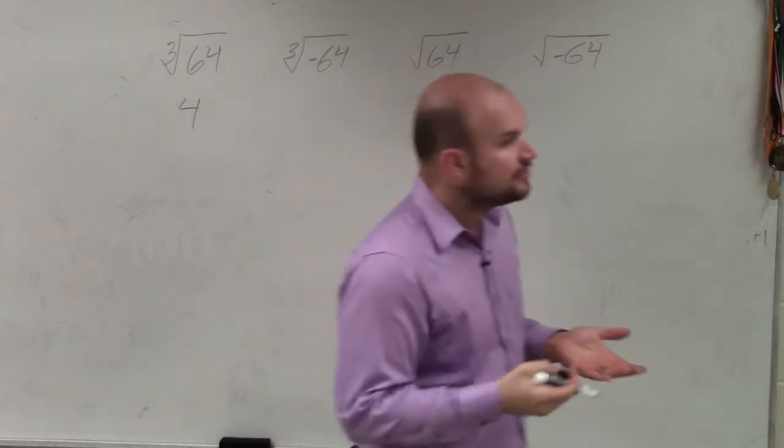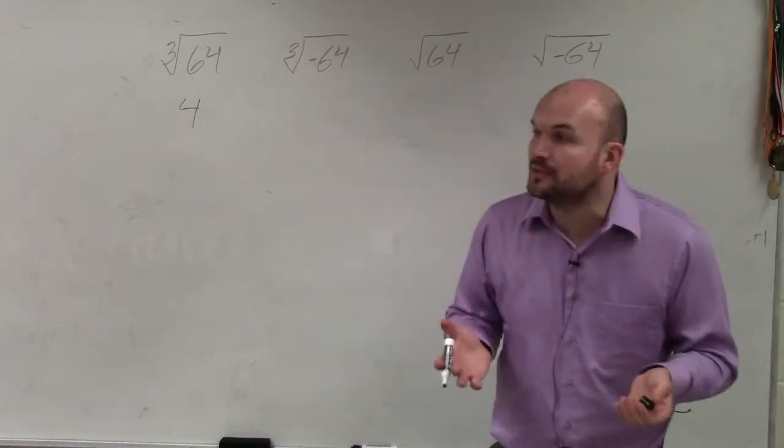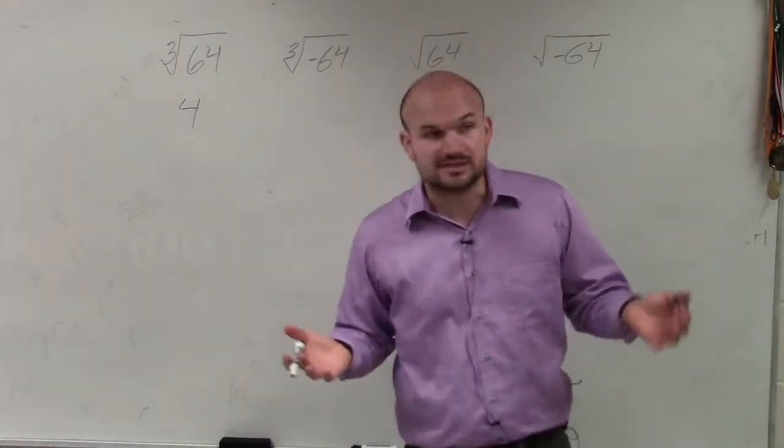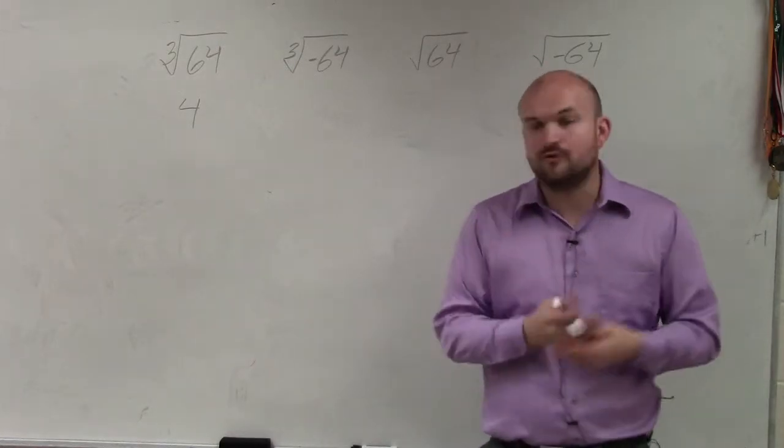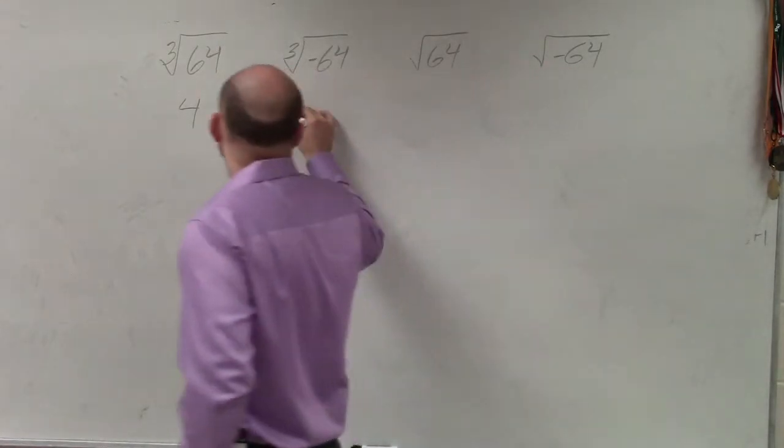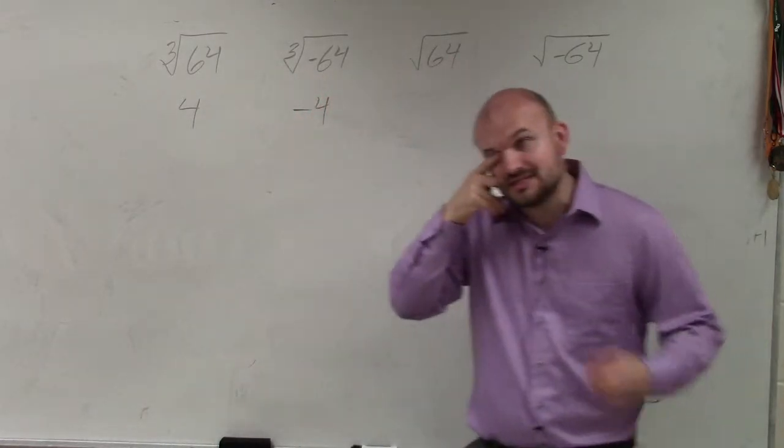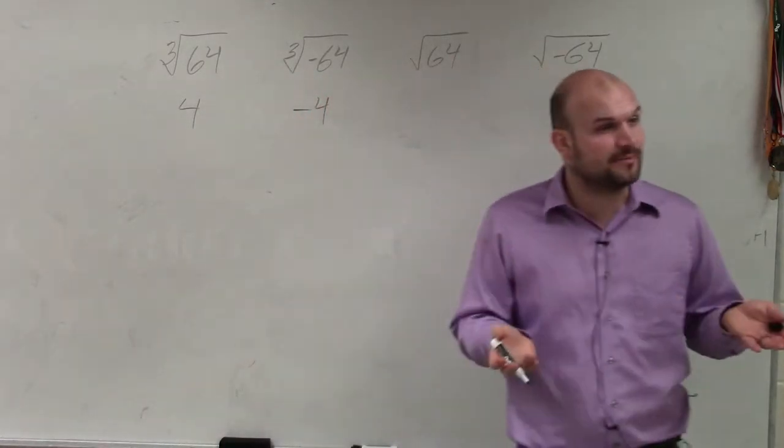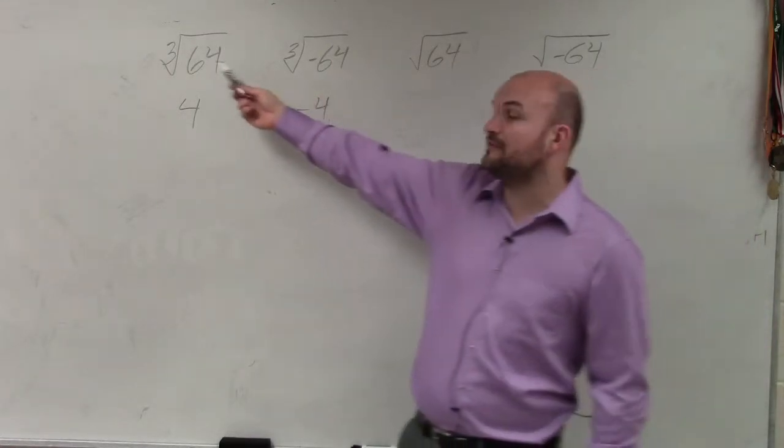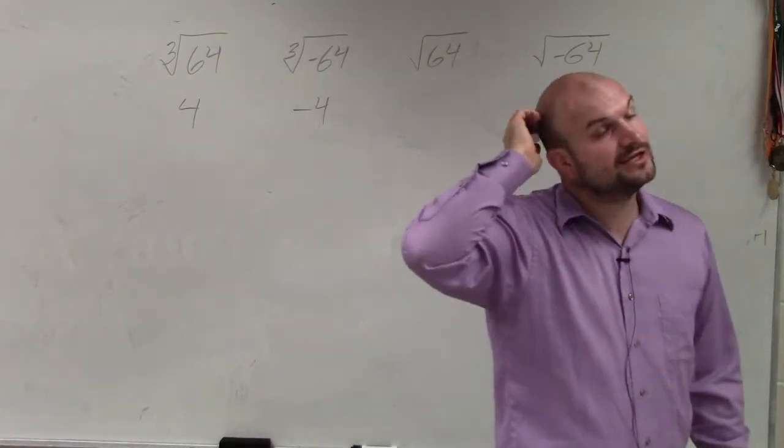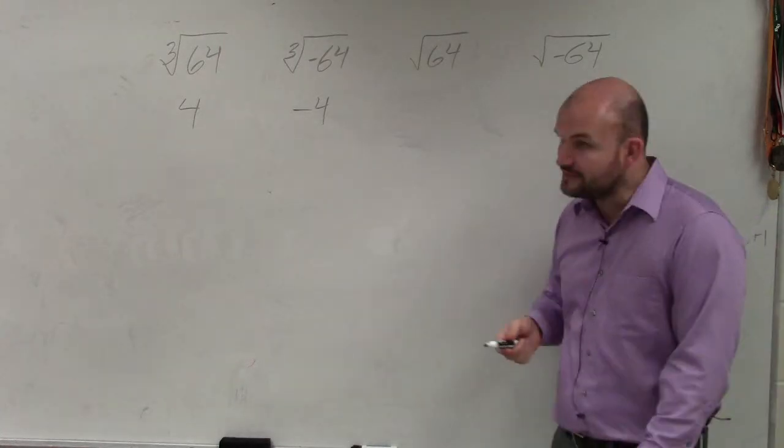When we look at the negative cube root, that's going to be what number is going to multiply 3 times to give you negative 64, which again would actually be negative 4 times negative 4 times negative 4. So when we have a cube root, we can either be a positive or a negative number. It really just kind of depends. And it doesn't matter if it's 3, 5, or anything else. If it's odd, you can take the odd root of a positive or negative number.